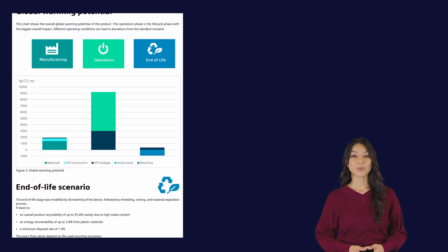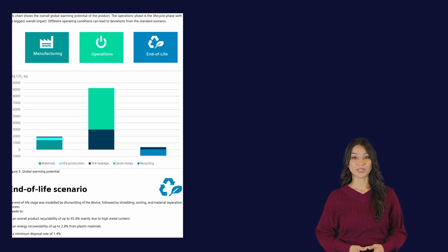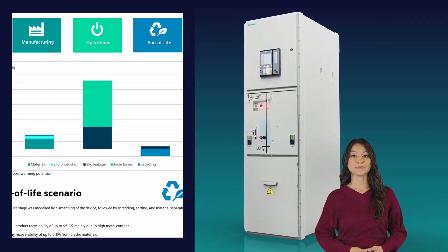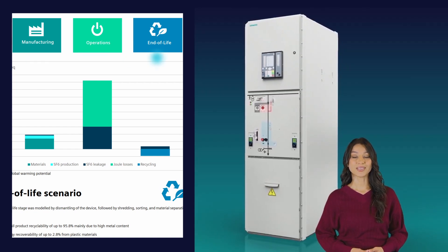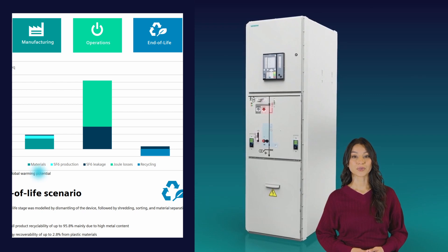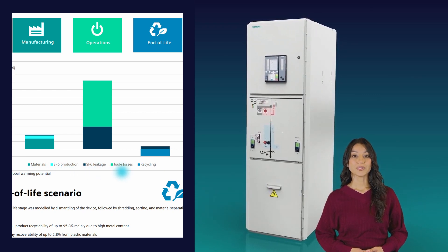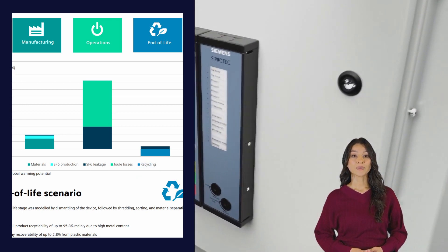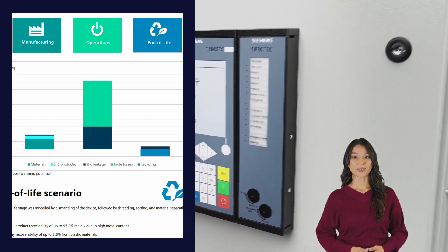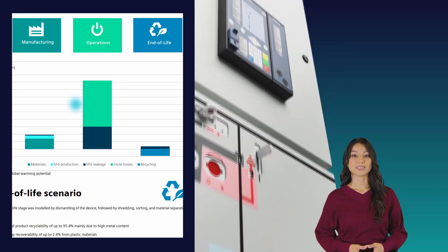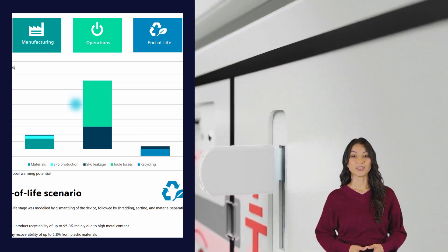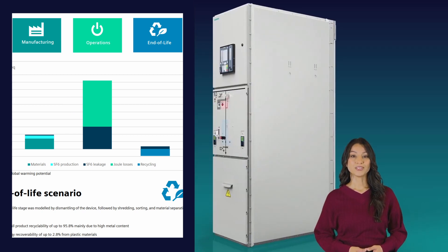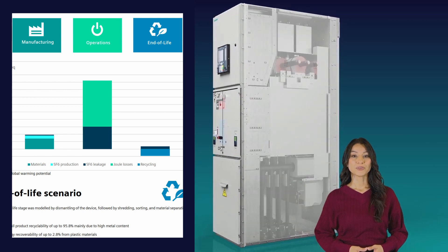Now, we present the global warming potential over the complete life cycle of a typical SF6 gas insulated switchgear separated into three phases — manufacturing, operations, and end-of-life — and then split into five components: materials, SF6 production, SF6 leakage, energy losses, and recycling. Customers can use the chart to see how their decisions can directly influence their own CO2 footprint. For example, using renewable electricity reduces the impact of joule losses to virtually zero. Please remember that the underlying assumptions previously mentioned directly influence this overview of the global warming potential over the lifetime of the product.